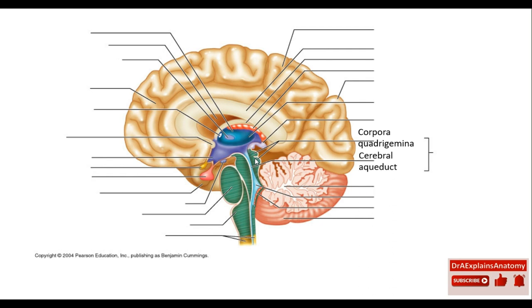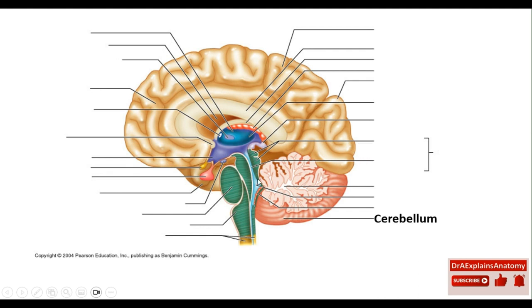This right here is the cerebral aqueduct — a duct where the CSF, the cerebrospinal fluid, circulates through it. This right here is the midbrain. As we mentioned, this is the pons, and this is the medulla oblongata. The midbrain, the pons, and the medulla oblongata together form the brainstem.